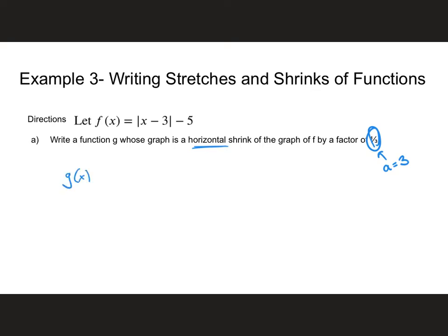So g(x) is equal to, the rule with horizontal stretching and shrinks says it's f(ax). Whatever the value for a is, we just replace it in there. I'm going to replace the value of a with 3 because that's what the value for a is in this particular problem. Now it's just using function notation and rewriting f(x), and instead of using x, we're going to replace every x with a 3x. So it's the absolute value of 3x minus 3 minus 5. That's all there is to it. This is, in fact, the answer.